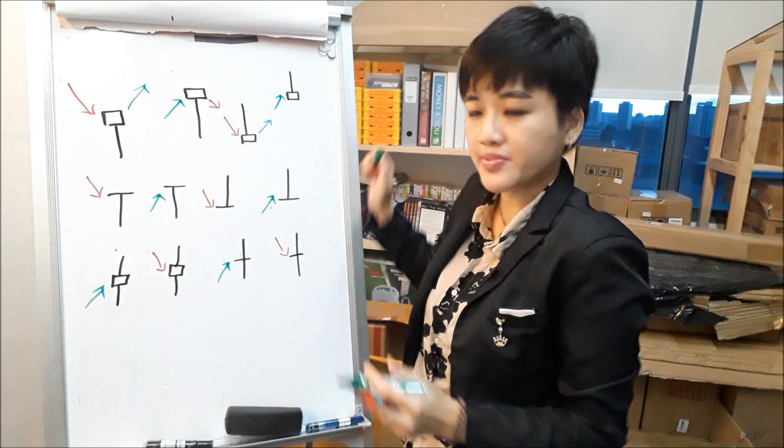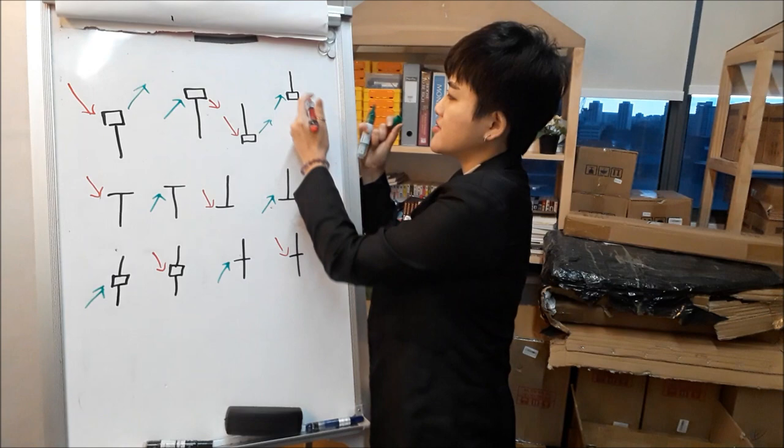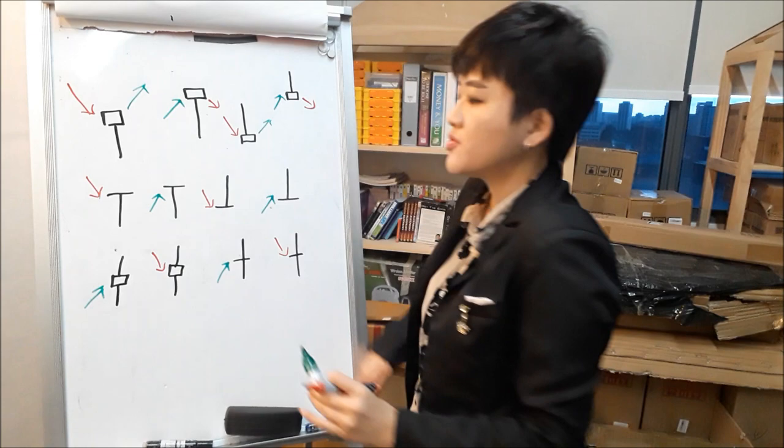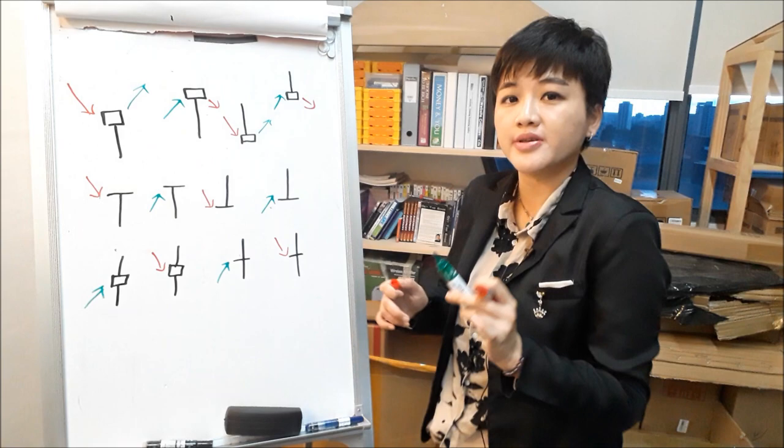If you see this pattern at the end of an uptrend, this tells you that price is going to U-turn and go down. Same thing for these patterns. When you see these patterns, it tells you that price might potentially U-turn from here.